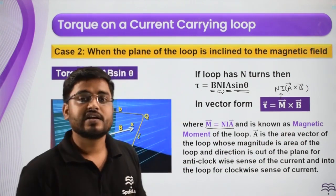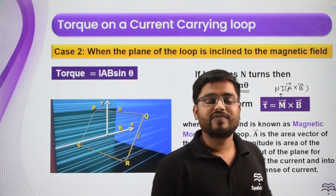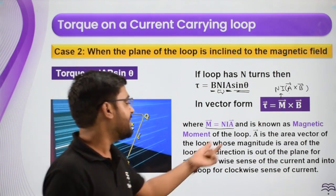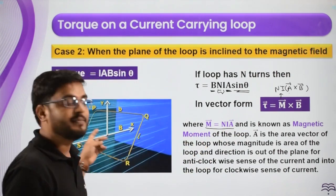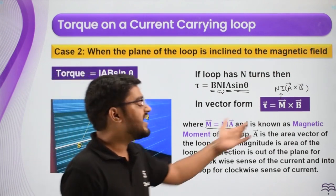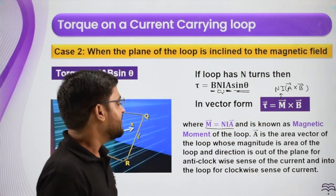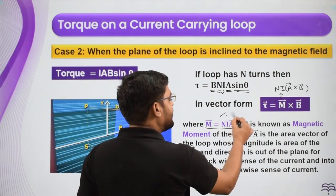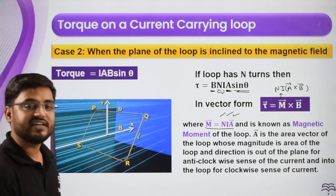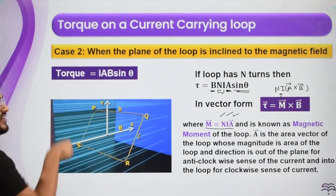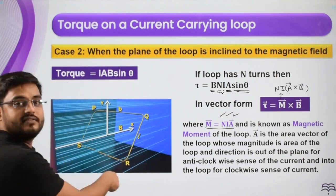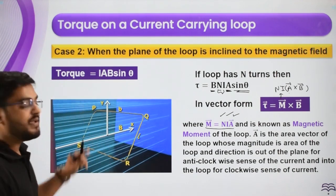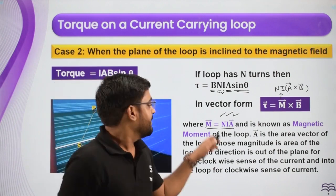Why do we talk about magnetic moment? Just as an electric dipole has an electric dipole moment, a current carrying loop behaves as a magnetic dipole and has a magnetic dipole moment written as capital M vector = NIA vector. The direction of the area vector: curl your fingers along the current direction — if current is clockwise it points into the plane, if anticlockwise it points out of the plane.